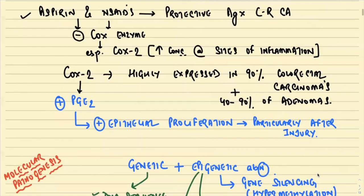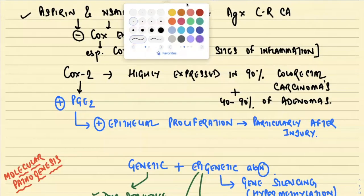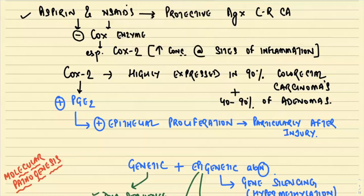The next important point is that aspirin and NSAIDs — all anti-inflammatory drugs we use — are protective against colorectal carcinoma. They provide protection against colorectal carcinoma.